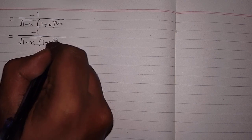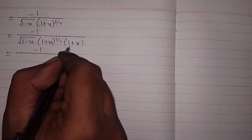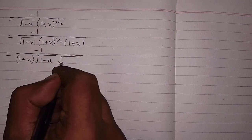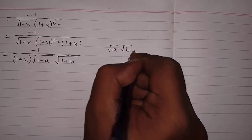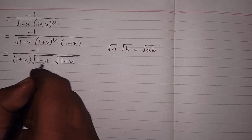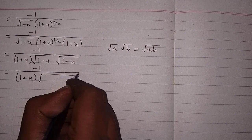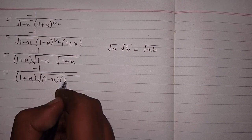So we have -1 / (√(1 - x) · (1 + x)^(3/2)). This can be written as -1 / (√(1 - x) · (1 + x)^(1/2) · (1 + x)). We then write (1 + x) first, and (1 + x)^(1/2) can be written as √(1 + x). Since √a · √b = √(a · b), we multiply the factors under the square root, giving -1 / ((1 + x) · √((1 - x)(1 + x))).